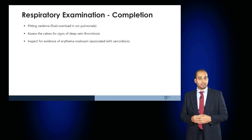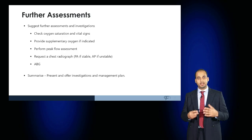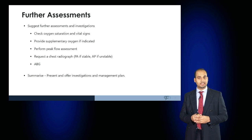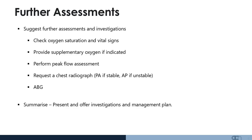To complete the examination, examine the peripheries. Look for signs of peripheral oedema, assess the calves for any signs of DVT, and inspect the legs for any signs of erythema nodosum which is associated with sarcoidosis. You would then want to perform further clinical examinations, check the patient's oxygen saturations and vital signs, provide supplementary oxygen if required, perform a peak flow assessment, and request appropriate investigations, summarising to the examiner and offering an appropriate management plan.